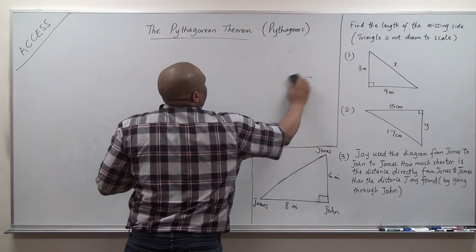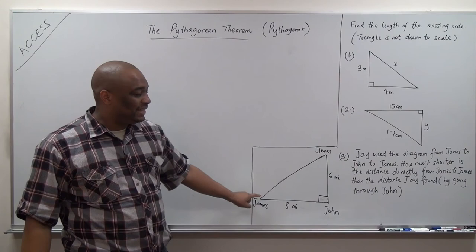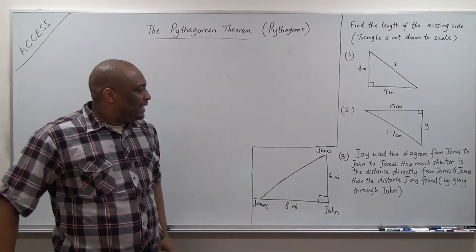Number three is a word problem. Jay used the diagram from Jones to John to James — it's like Montgomery to Mobile to Birmingham. How much shorter is the distance directly from Jones to James than the distance from Jones to John to James?